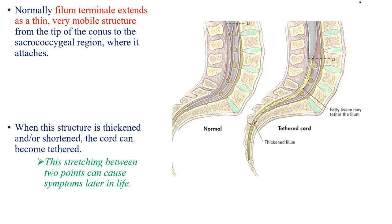Normally, the filum terminale extends as a thin, very mobile structure from the tip of the conus to the sacrococcygeal region where it attaches. When this structure is thickened and/or shortened, the cord can become tethered. This stretching between two points can cause symptoms later in life.